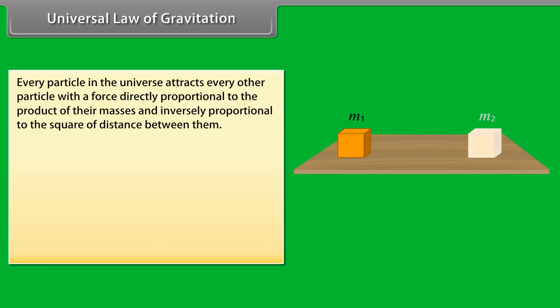Universal Law of Gravitation. According to Newton's Law of Gravitation, every particle in the universe attracts every other particle with a force directly proportional to the product of their masses and inversely proportional to the square of distance between them.